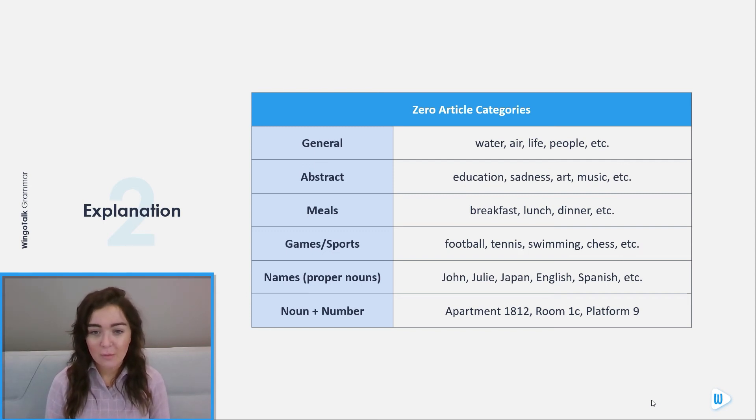Names, so proper nouns: John, Julie, Japan, English, Spanish. Noun or a number: apartment 1812, room 1C, platform 9.